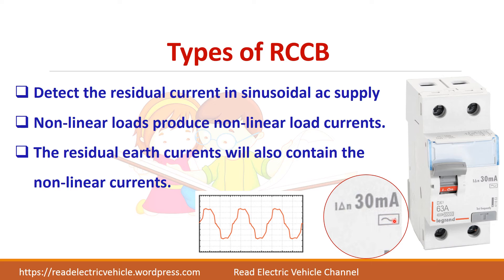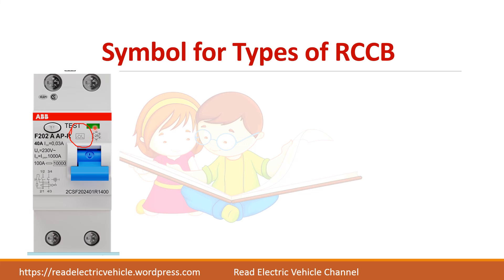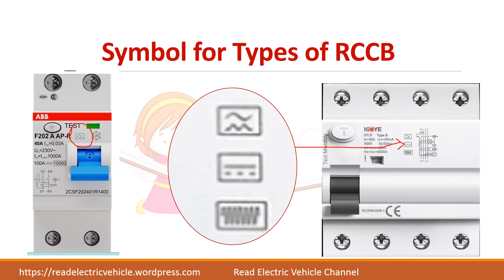The symbol on the RCCB shows what type of current it can detect. One model shows two waveforms: a sinusoidal one and a rectified DC waveform. Another model shows different waveforms — sinusoidal, a DC waveform, a smoothed DC waveform, and a high frequency signal. These are the types of waveforms that can be detected by that particular RCCB, and it will be specified by the manufacturer.